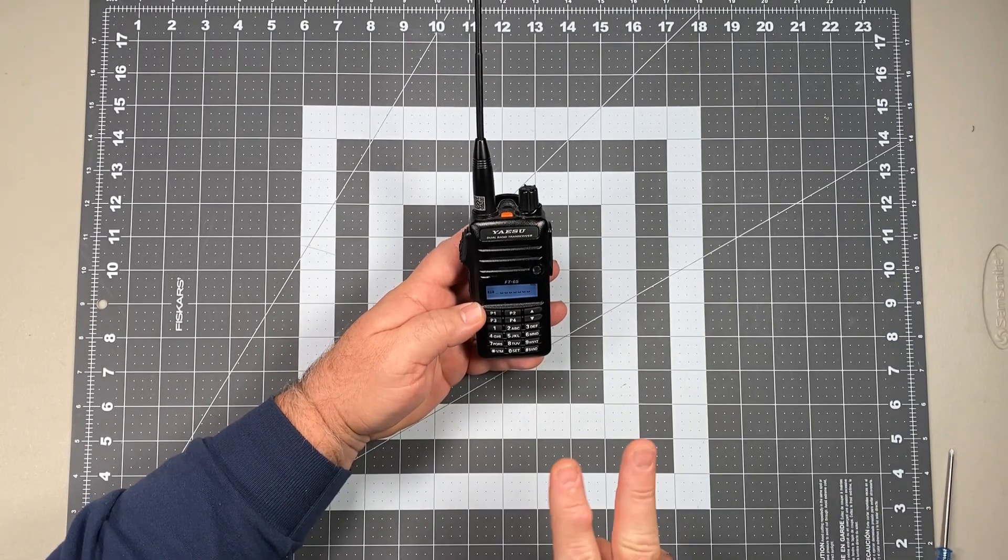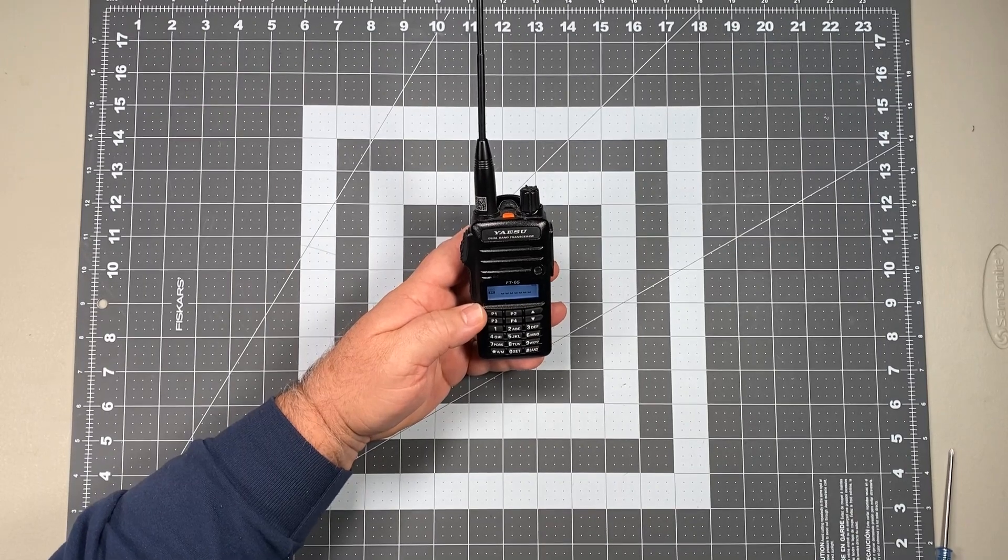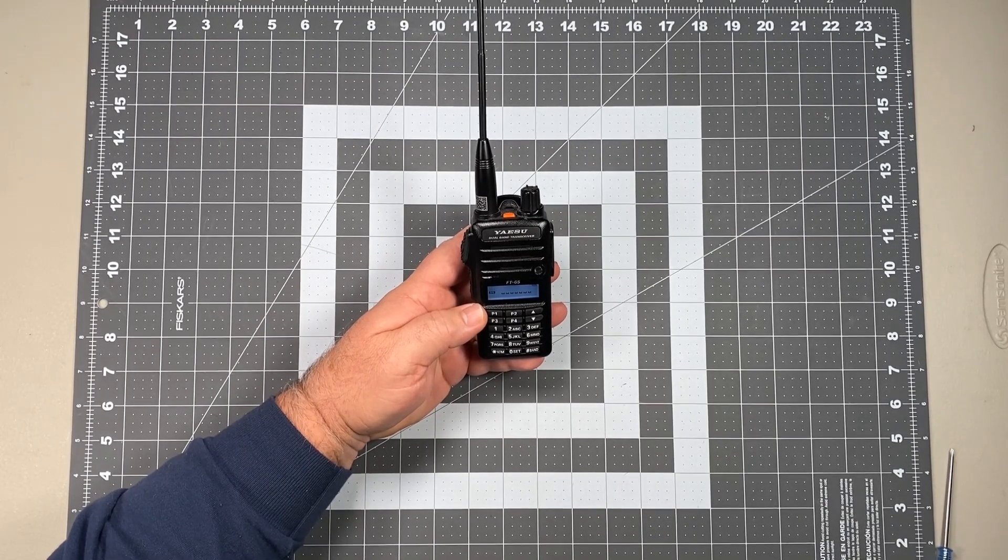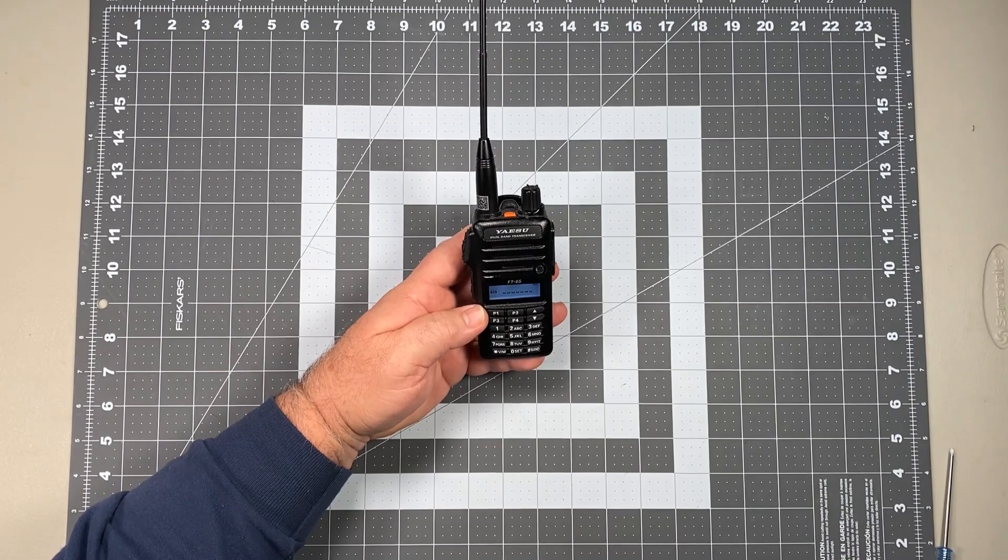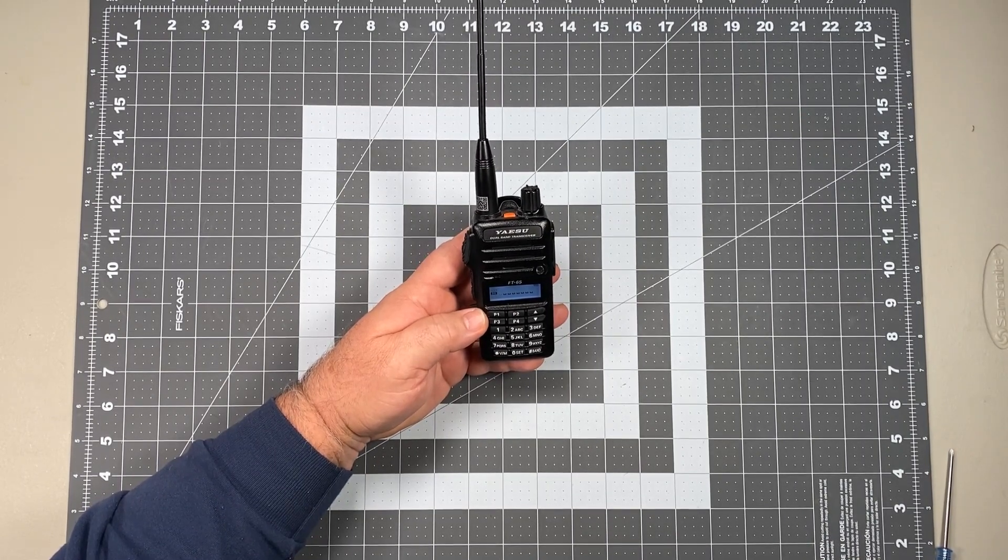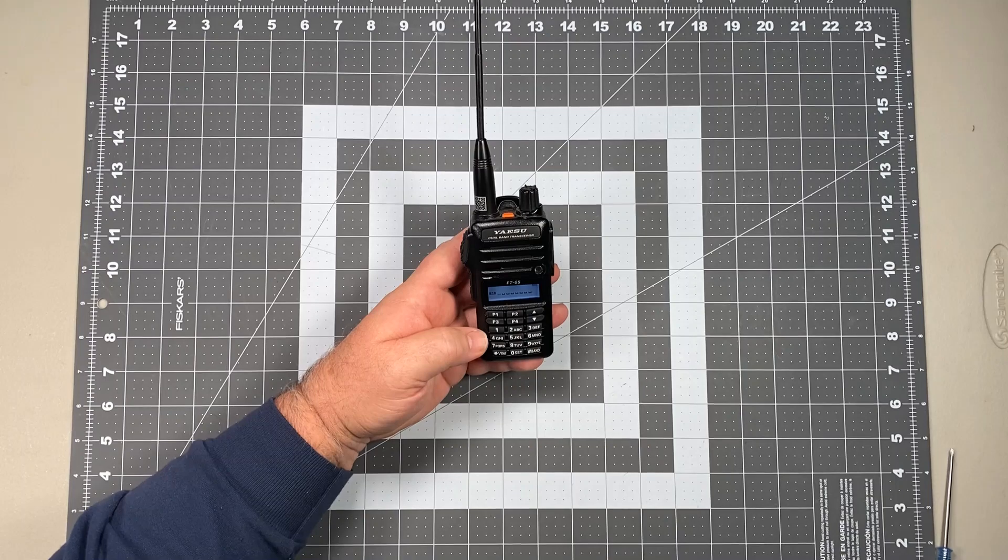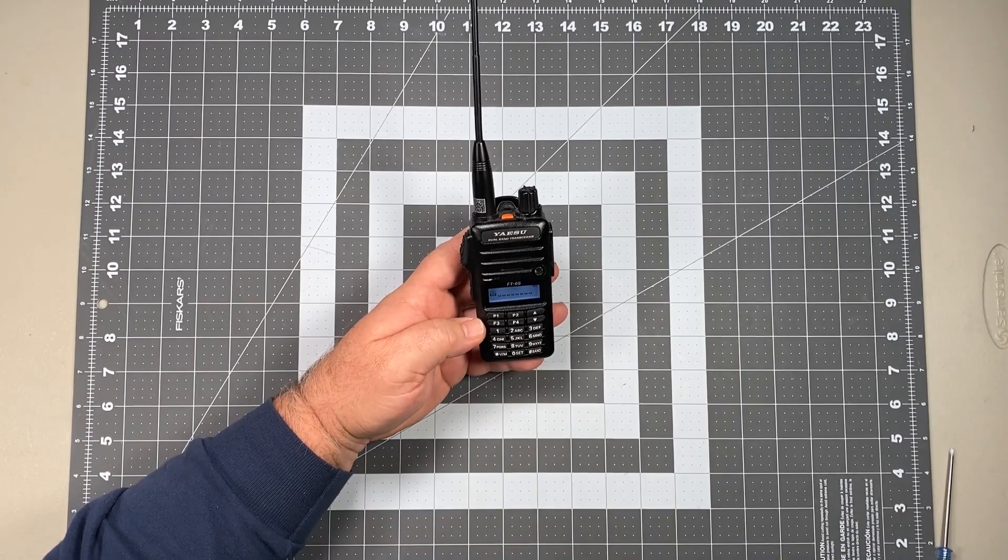Now at this point you have two choices. If all you want to do is just store that as a raw frequency, we can move on to the next step. But if you want to actually give this thing an alphanumeric name, we can do that at this point. And this is how this is done with the keys.